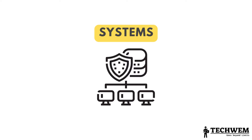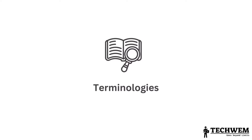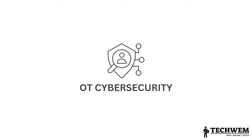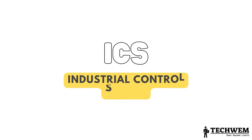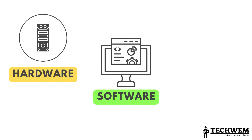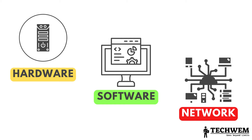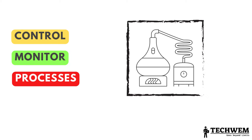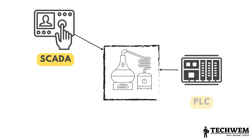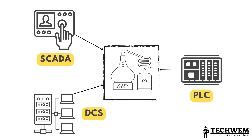Before we proceed further, let's familiarize ourselves with some important terminologies and definitions in the world of OT cybersecurity. Understanding these terms will help us navigate the complexities of this field more effectively. Number 1: ICS, Industrial Control System — a collection of hardware, software and network technologies used to control and monitor industrial processes. It encompasses various systems like SCADA, PLC, DCS and more.